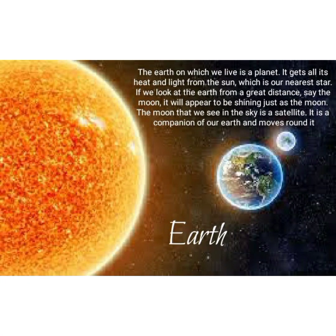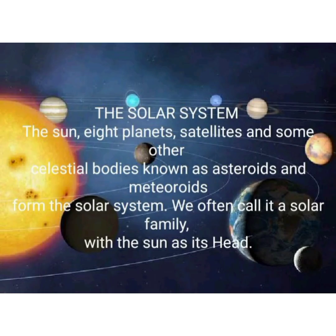We will study about Earth. Earth is a planet on which we live and it gets all its heat and light from the Sun. Earth is a planet, planets don't have their own light, and the Sun is a star that does. So Earth gets its heat and light from the Sun, which is our nearest star. If we look at Earth from a great distance, it would look exactly like how the Moon looks. The Moon, which we see in the sky, is a satellite and the companion of our Earth.